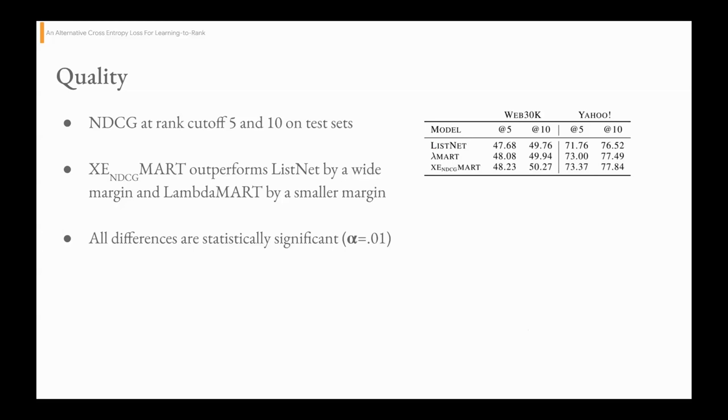In order to examine quality, we're going to measure NDCG at rank cutoffs 5 and 10 for each of the methods on both datasets. We have ListNet, which is implemented with GBRTs here. We have LambdaMART and the modified cross-entropy loss with GBRTs. One thing that stands out is that the slight modification to the loss function, which resulted in this modified cross-entropy loss, actually made a significant difference in terms of model quality. It shows that having a theoretically sound link between the loss function and the metric itself plays an important role in the optimization procedure.